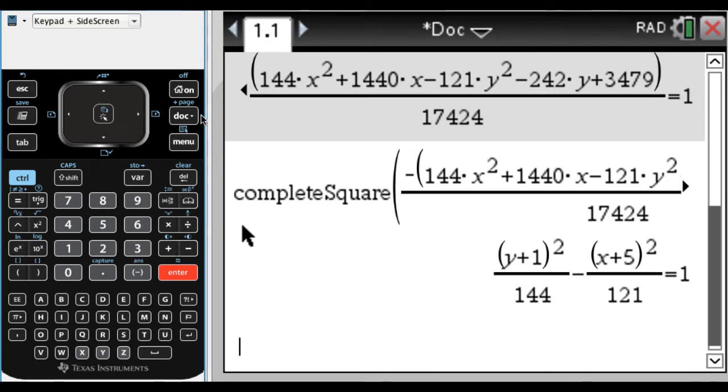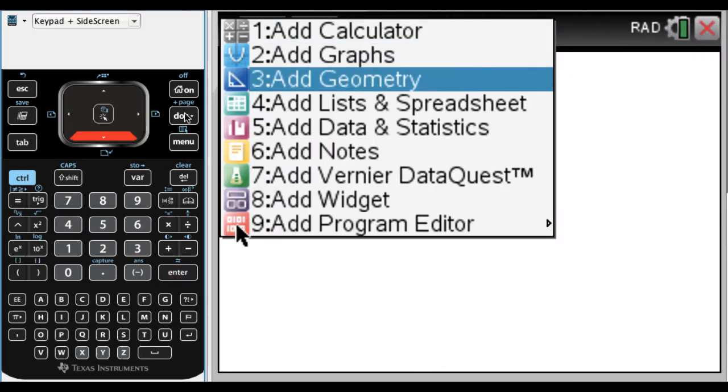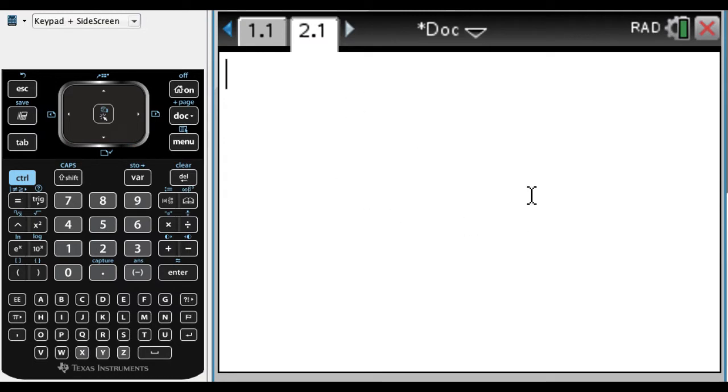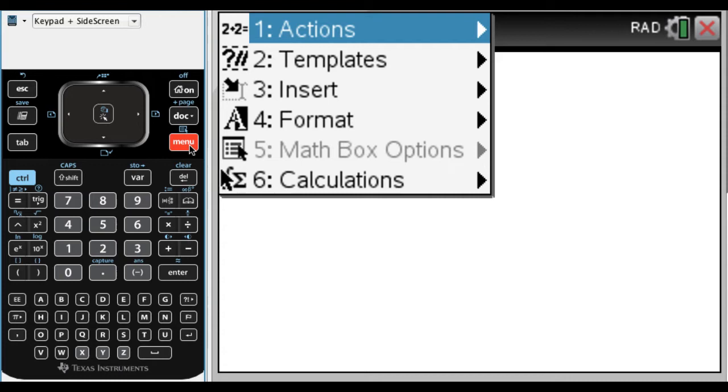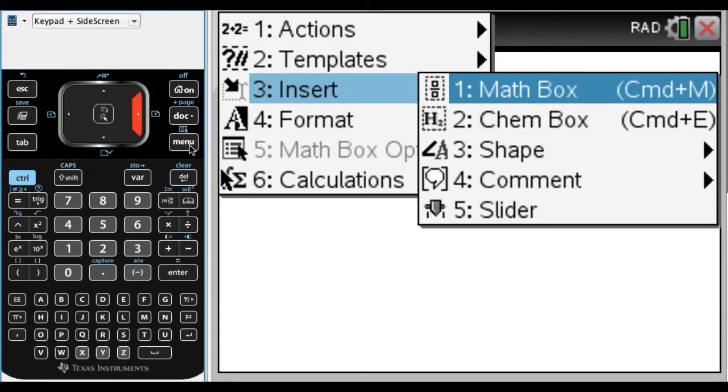There's this kind of nice thing we can do. I'm going to add a problem, and I'm going to add a notes page. It's hard to tell you're in a notes page and not a calculator page, but if you try to do 2 plus 2 and press enter, nothing happens. Any math we want to do, we're going to have to do in a math box. So I press menu, insert, option 1 is math box.